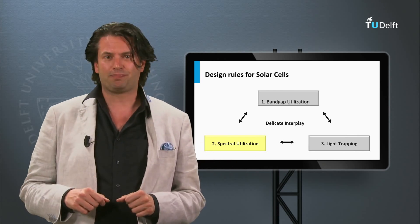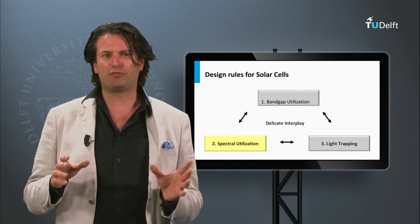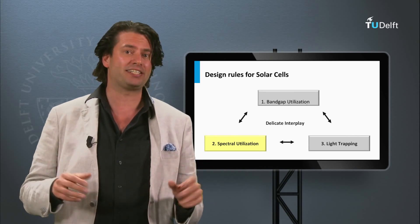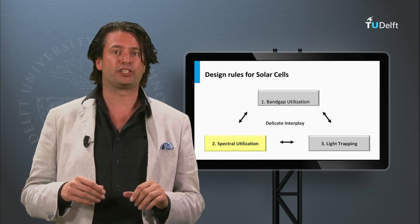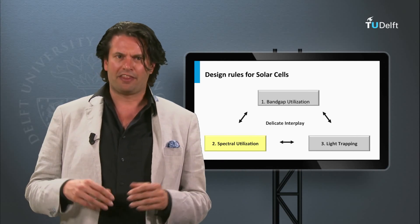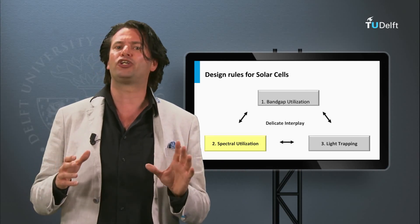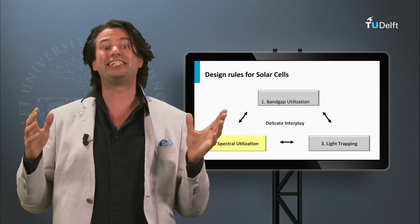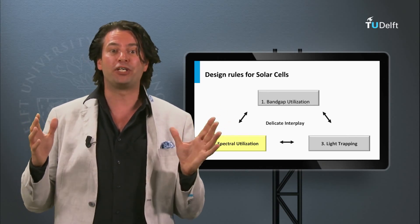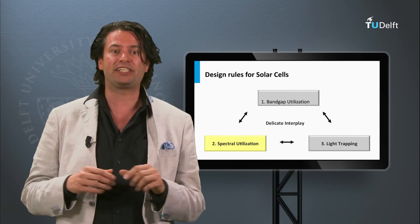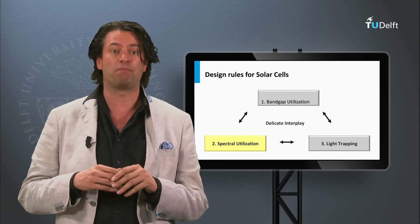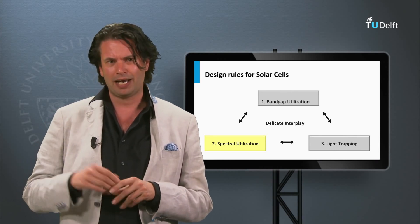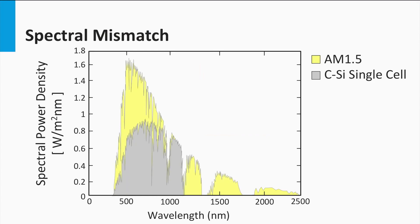For a single junction solar cell, the band gap of the semiconductor material determines the theoretical maximum current density and the open-circuit voltage that can be obtained. Therefore, considering single junction solar cells, we arrive at the next question: what is the optimum band gap for the absorber semiconductor at which the highest conversion efficiency can be obtained using the AM1.5 solar spectrum? Let's find an answer to that question.